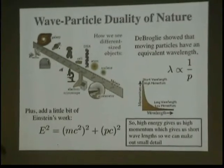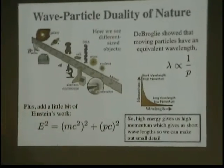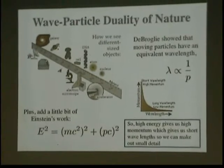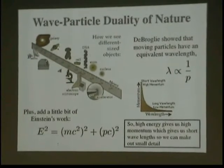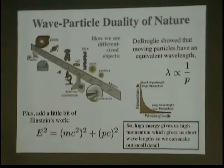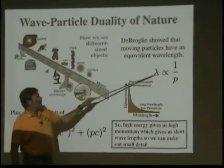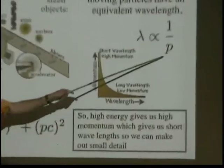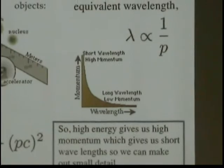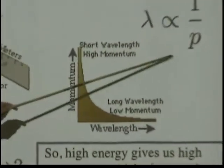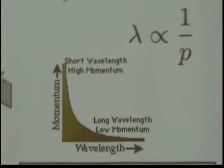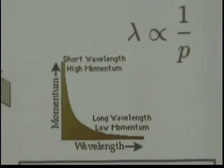Well, there's a physicist many years ago, de Broglie. He showed us that moving particles have an equivalent wavelength. And the way that works is that their wavelength is inversely proportional to their momentum. So, as a particle gains higher momentum, they have shorter wavelength. You see that shown here.